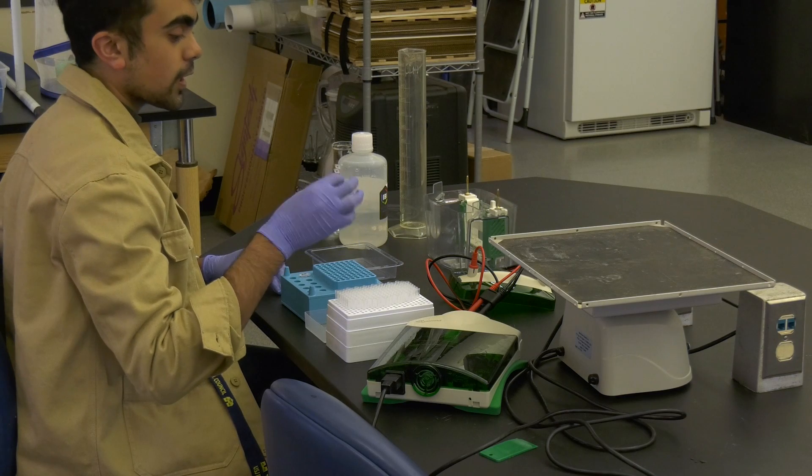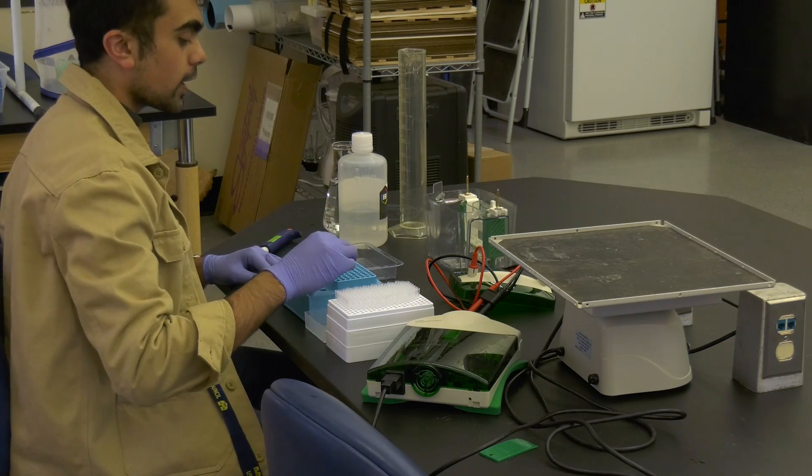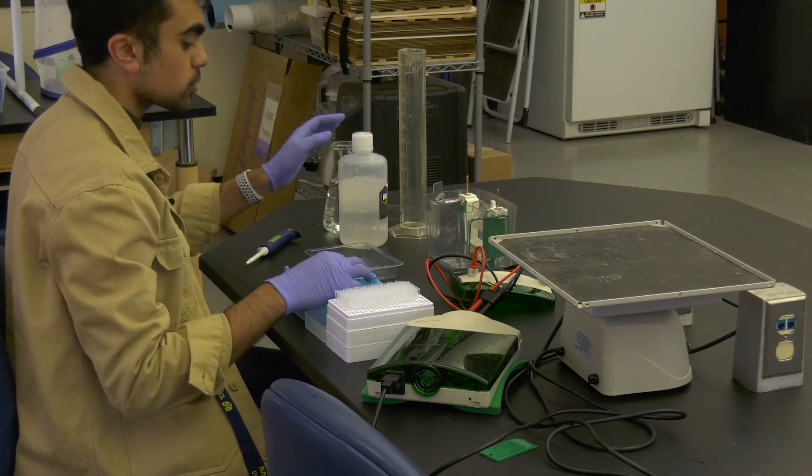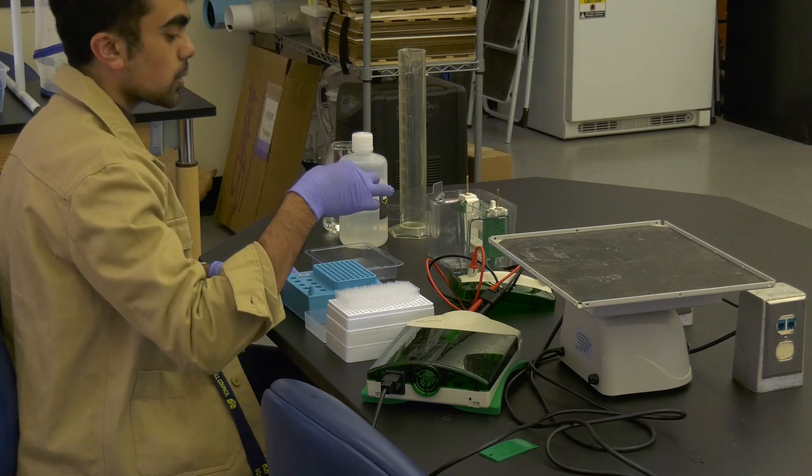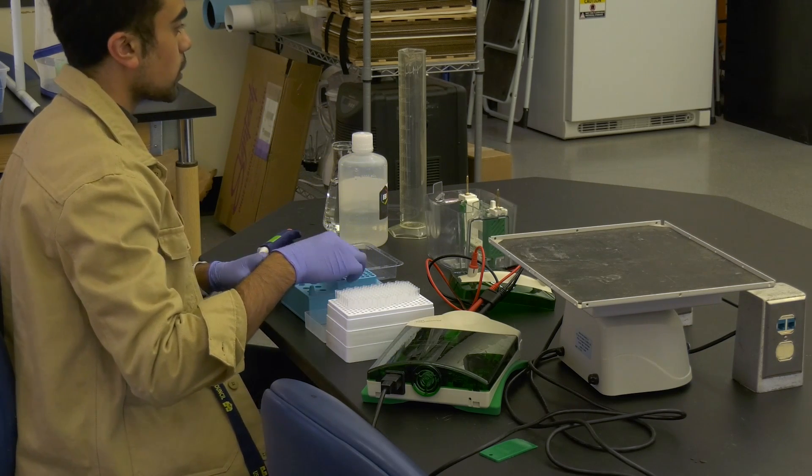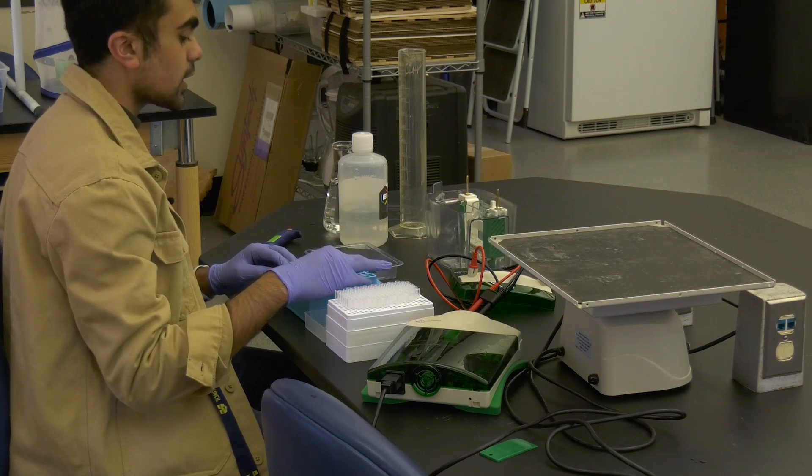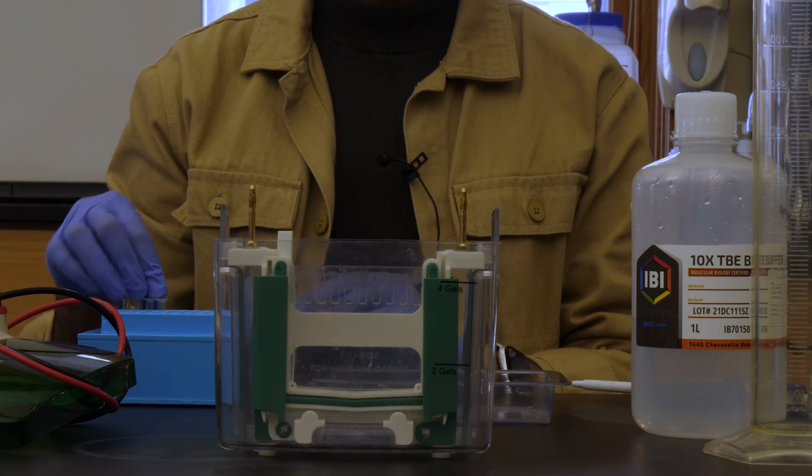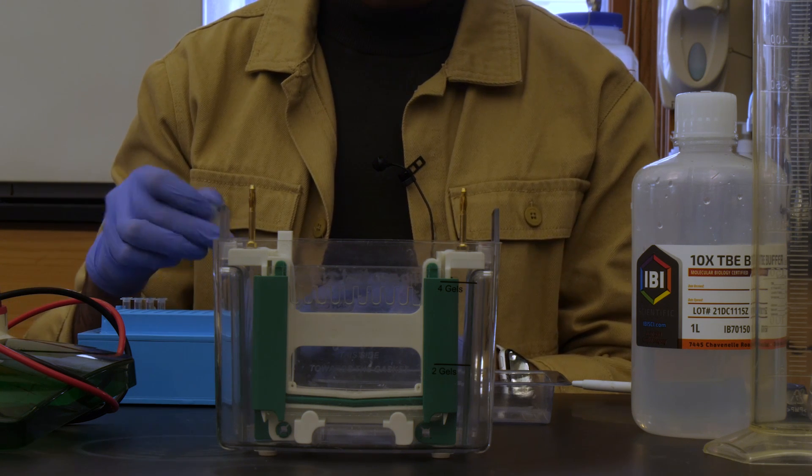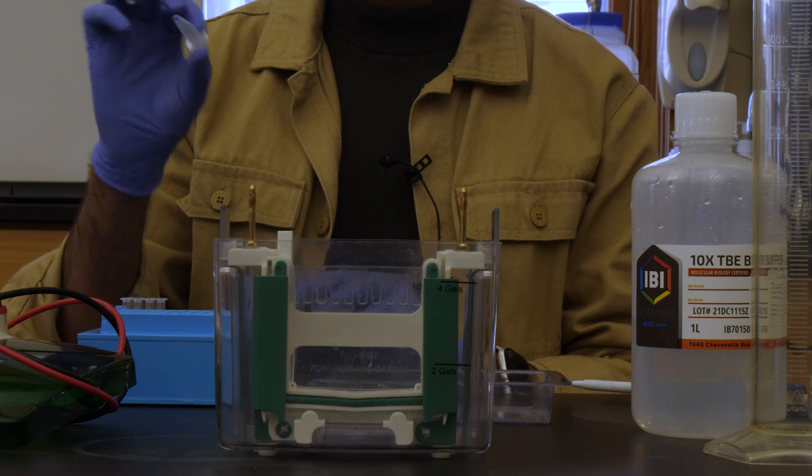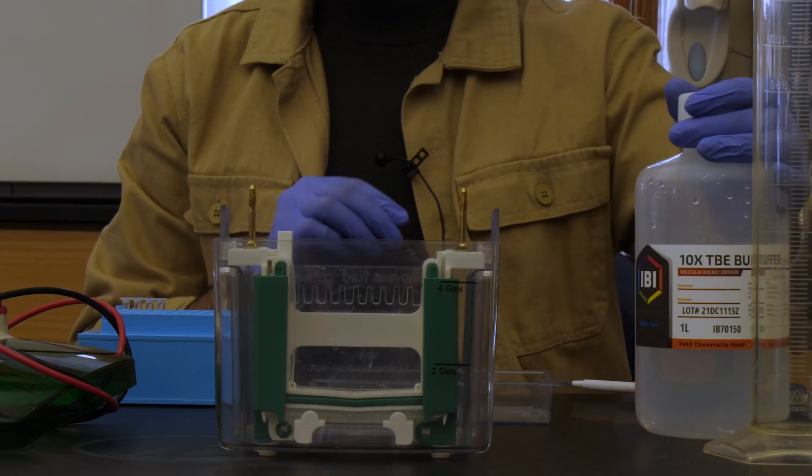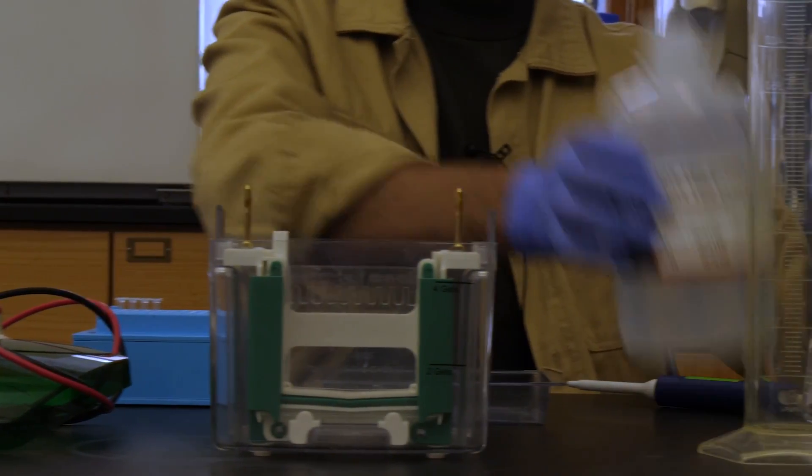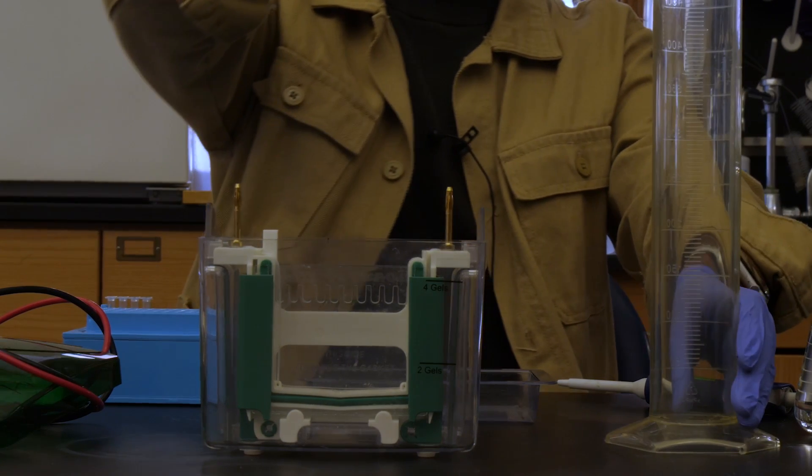Now that we have our PCR product, we can go ahead and run our product through a process known as gel electrophoresis. What we will be looking for here on a gel is bands indicating the size of your product of interest. Because we are looking at microRNAs, our products are very small, so we will be using a low weight molecular marker. Before we go ahead and run our gel, we will just be making our buffer into which we'll dispose into the apparatus.